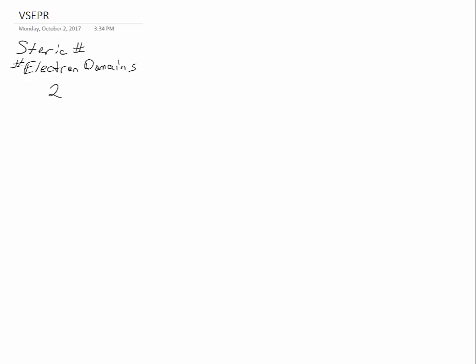For a steric number of two, the geometry, or the electron geometry, will always be linear. An example of this would be CO2, or HCN.